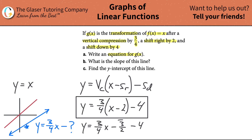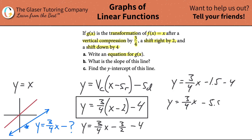Now what can we do? We can combine these like terms. Let's do it on the right-hand side — we can do it in decimal form. 3 halves is like minus 1.5, minus 4. So this works out to be 3 quarters x minus 5.5. And if you need to convert this into a fraction, 5.5 is the same as 11 over 2. So this is the equation.